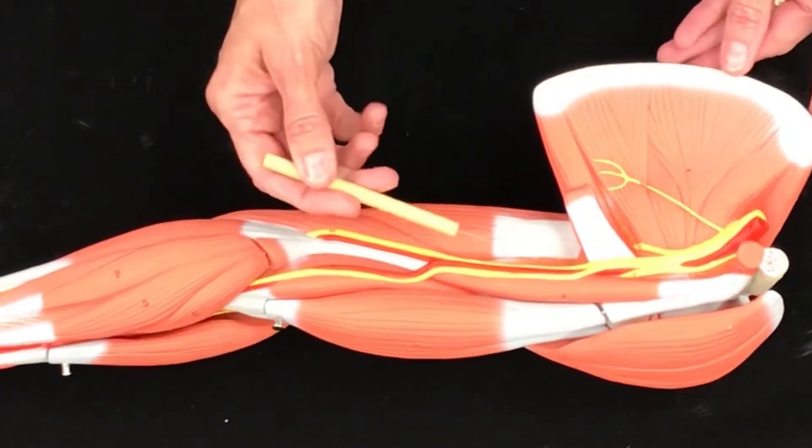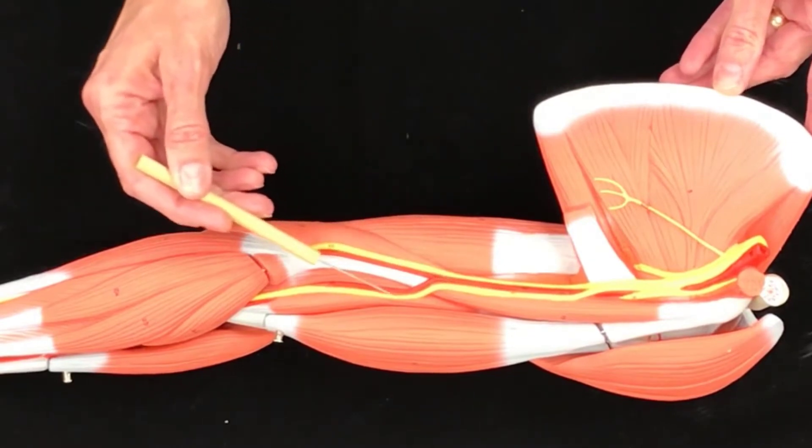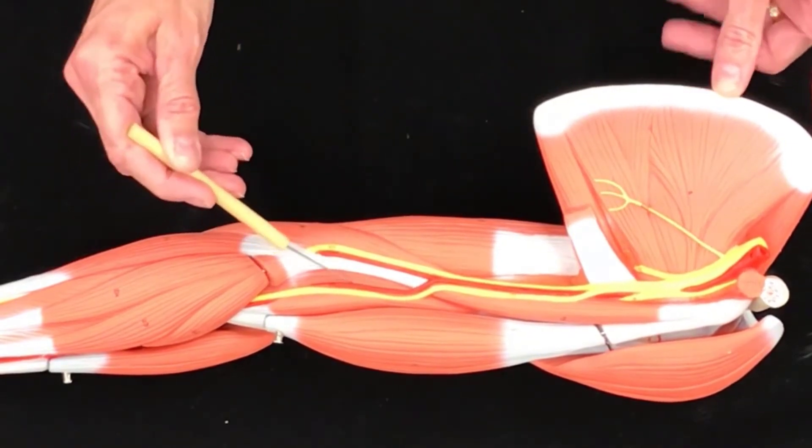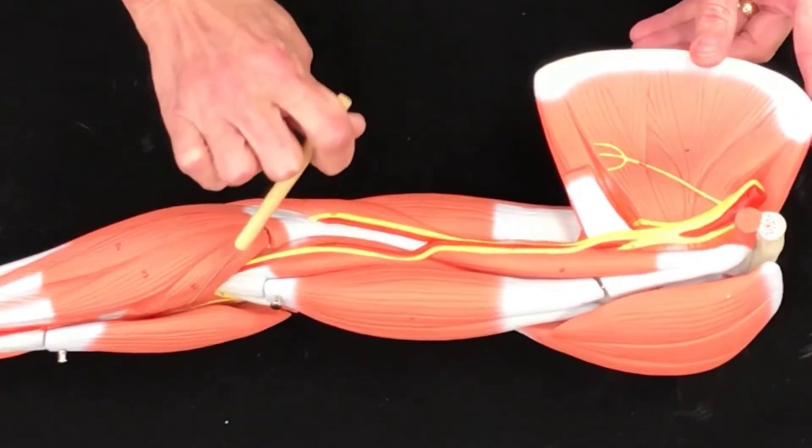Then we can see the brachial artery. Remember, we use the brachial artery for taking blood pressures. The brachial artery comes down and splits,